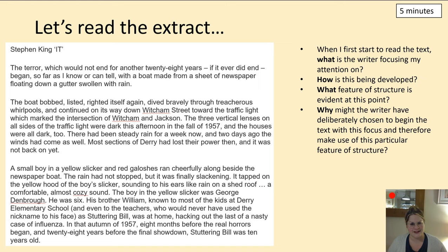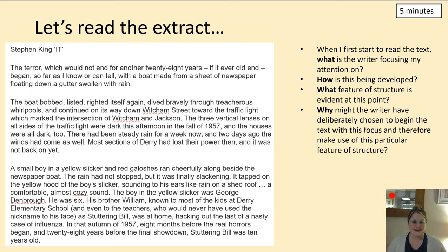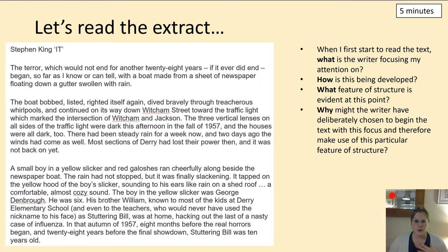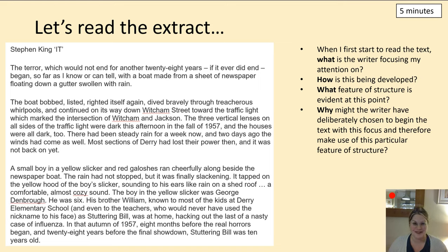'The boat bobbed, listed, righted itself again, dived bravely through treacherous whirlpools and continued on its way down Witcham Street towards the traffic light. The three vertical lenses on all sides of the traffic light were dark this afternoon in the fall of 1957 and the houses were all dark too.' We've got a shift of focus — from this overarching idea of terror, we're focusing on that boat. Because we know something terrible is going to happen, when it's revealed that the traffic lights are dark and there's no power, we immediately think perhaps there's going to be some sort of collision. There's this significance of darkness, and it foreshadows what could happen later, which makes it even more unnerving.